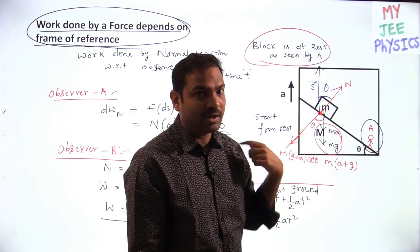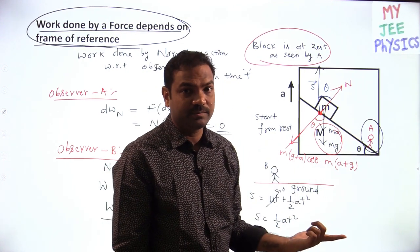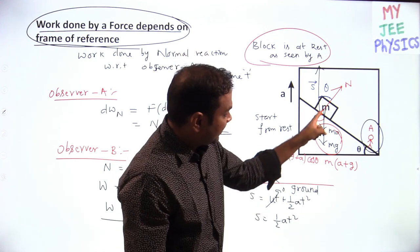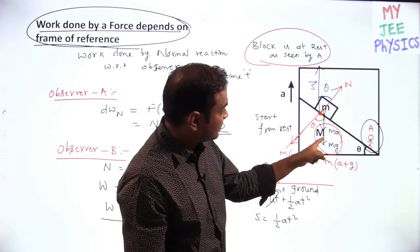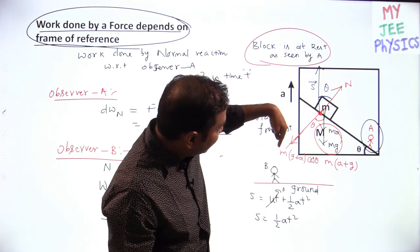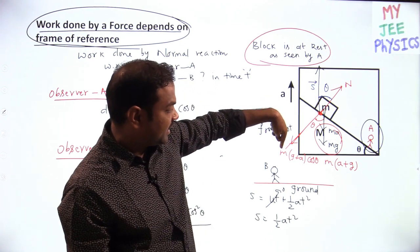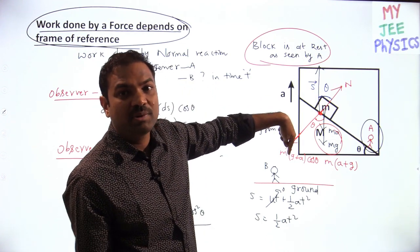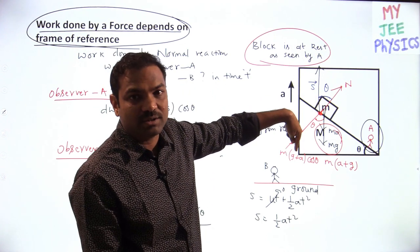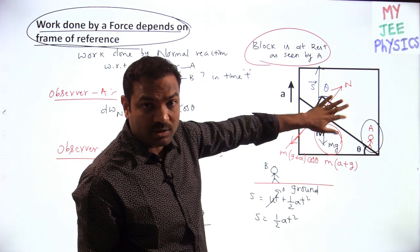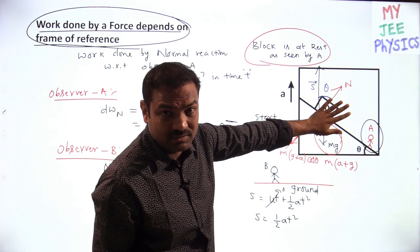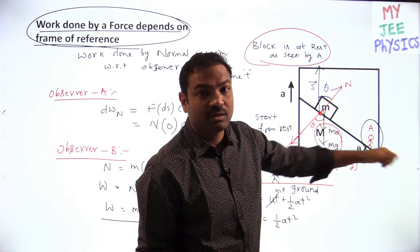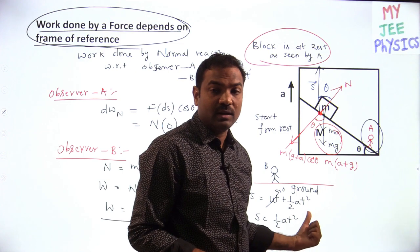A is in a non-inertial frame, so I apply the pseudo force. I equate the normal reaction with M(g + a)cos θ because I balanced the forces and the block is at rest with respect to A, not with respect to B. If solving with respect to B, the block is accelerating, and I would write Newton's second law (F = ma) instead.